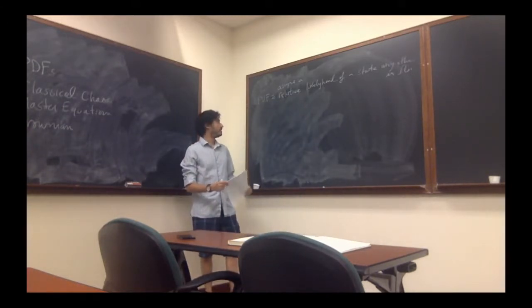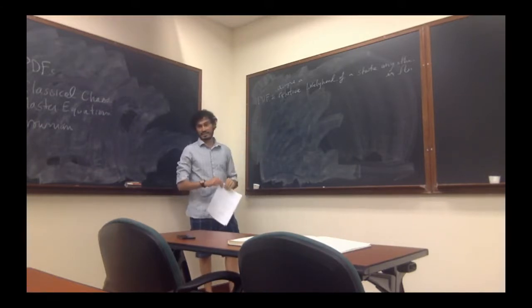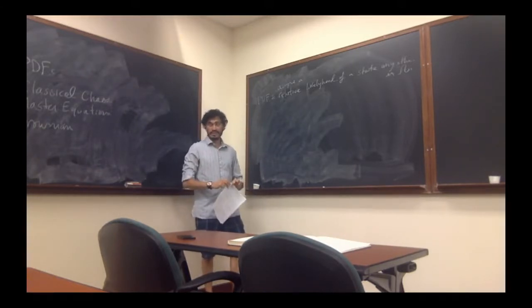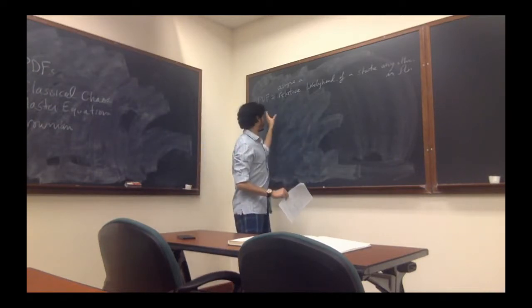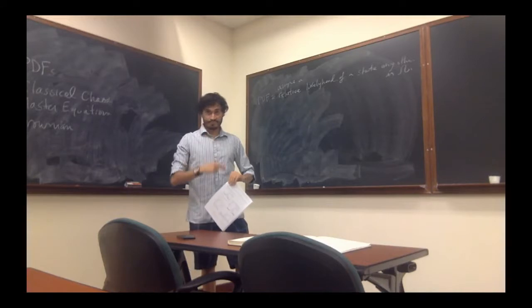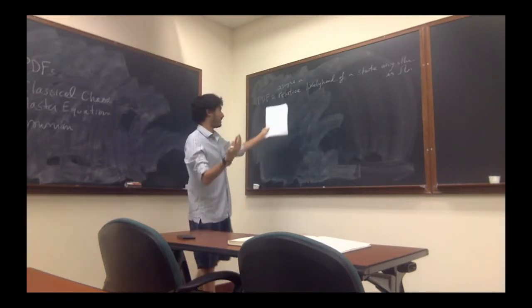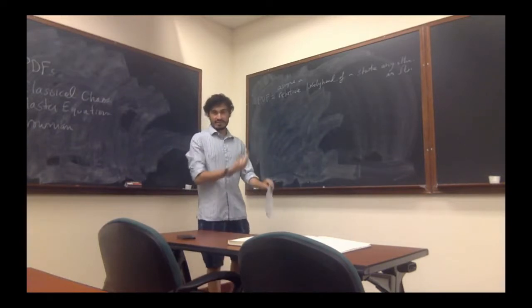And additionally you can even think of it as a discrete space. Formally speaking, probability density functions are defined on the continuum. And then the analog, the discrete analog of probability density function is the probability mass function, which assigns relative probabilities or likelihoods rather to each state in the state space.